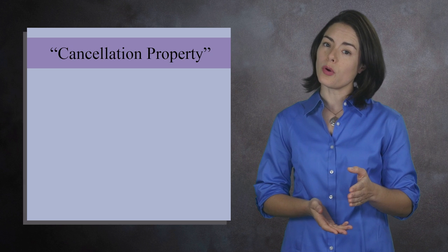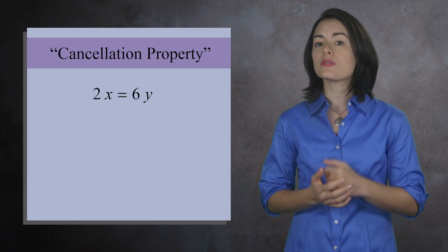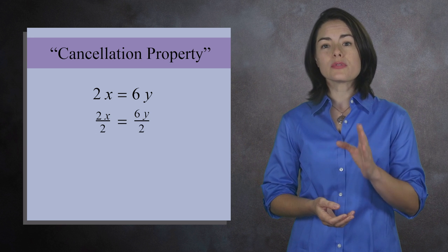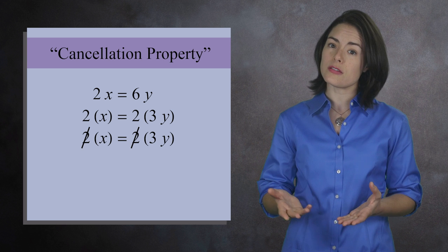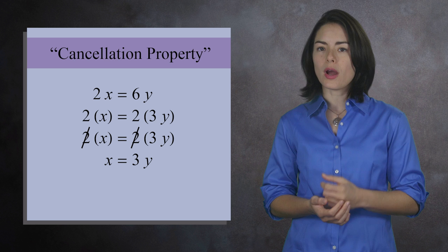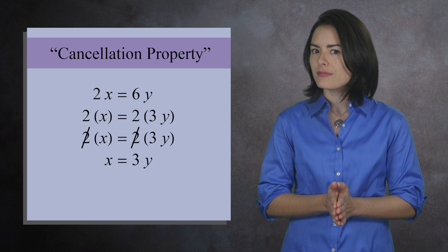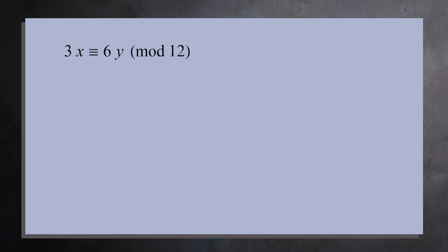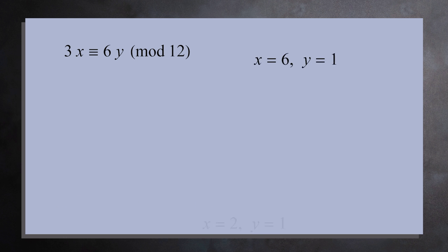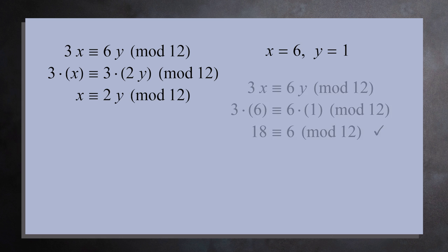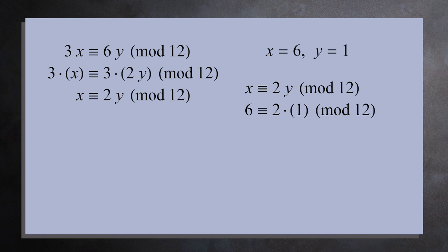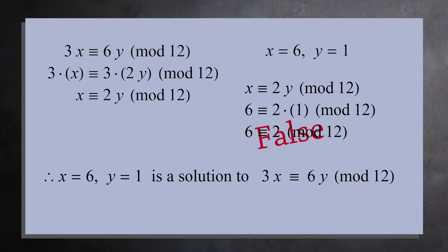Integral domains have another useful property: the cancellation property. Suppose you want to find the solutions to the equation 2x equals 6y. Your instinct might be to divide both sides by 2, giving x equals 3y, but when working with a ring you may not be able to divide. Unfortunately, you can't safely cancel in any ring. Look at 3x equals 6y in the ring of integers mod 12 — one solution is x equals 6 and y equals 1, since 18 is congruent to 6 mod 12. But if you factor out 3 and cancel, you get x equals 2y, and plugging in x equals 6 and y equals 1 gives 6 congruent to 2 mod 12, which is false.